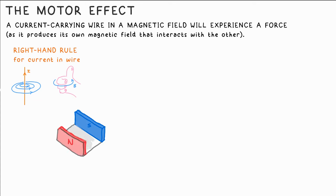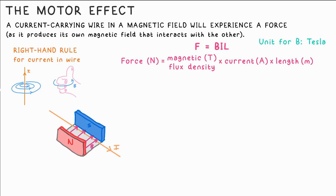The motor effect is when such a wire is in another magnetic field and it will experience a force. The equation is F equals BIL where F is force, I is current in amps, L is length of the wire in the magnetic field, and B is the magnetic flux density, essentially the magnetic field strength. This is measured in Tesla.